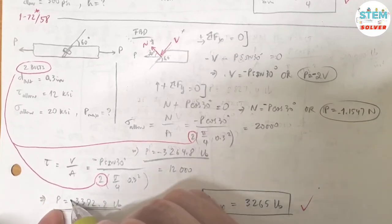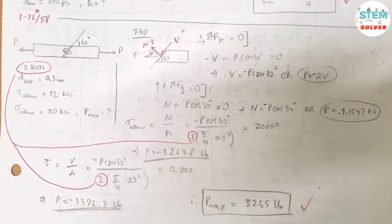Then solve for P. You will get negative 3,392.9 pounds. So the P is negative sign, so that means that it just goes into the opposite direction.